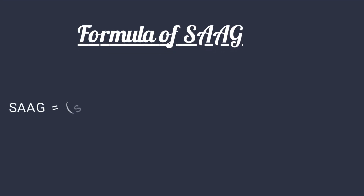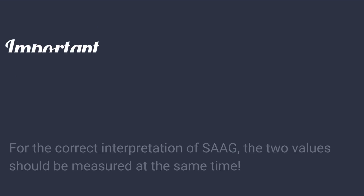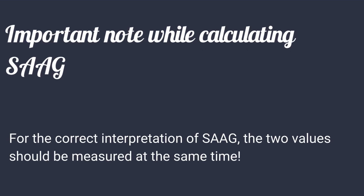The formula of SAG: to calculate SAG, we subtract ascites fluid albumin levels from serum albumin levels. Importantly, for correct interpretation of SAG, the two values should be measured at the same time.